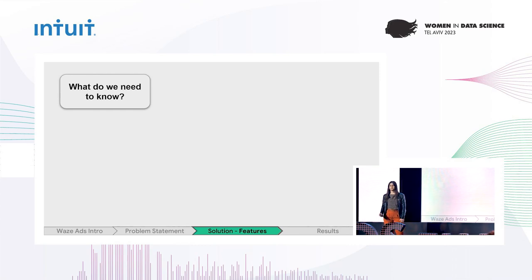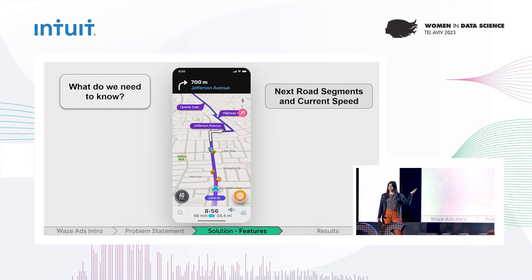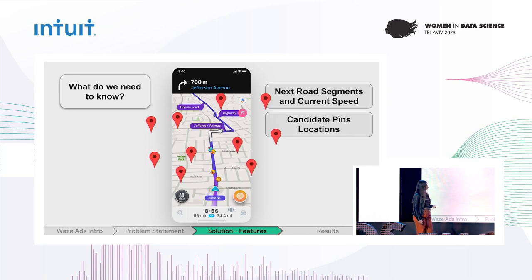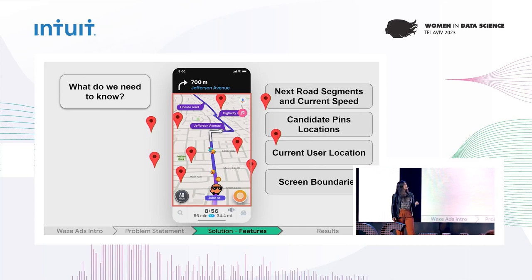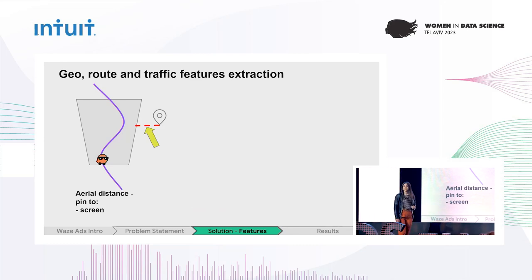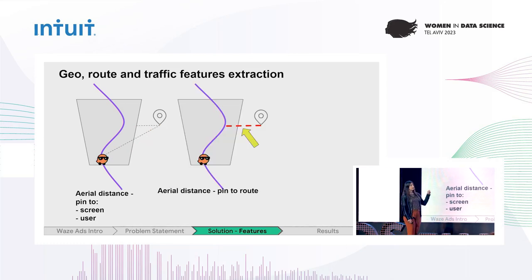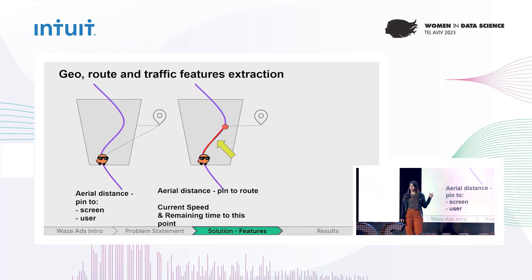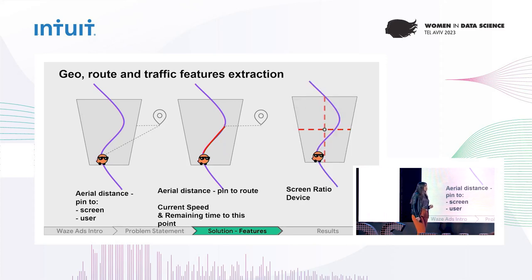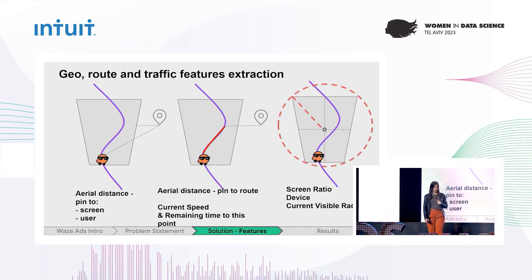Let's look at the data and features. What do we actually need to know? We want to know the next road segments the user is going to cross, the candidate pins' locations, the current user location, and the current screen boundaries. We take this data and transform it into features. The most important ones include: the distance of the pin from the screen and from the user, the distance of the pin from the closest point on the route and the time it would take the user to reach that point considering current speed and traffic conditions, and device attributes like screen ratio, device type, and the current visible radius on the screen.